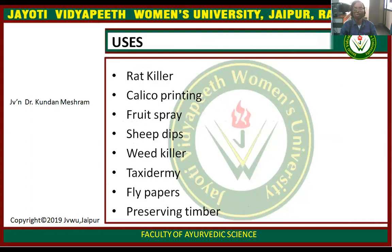The uses of arsenic include its common use as rat poison, calico printing, fruit spray, sheep dip, weed killer, taxidermy, flypaper, and as a preservative for timber.